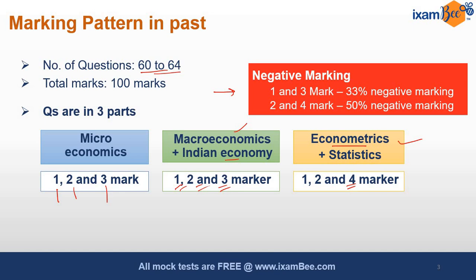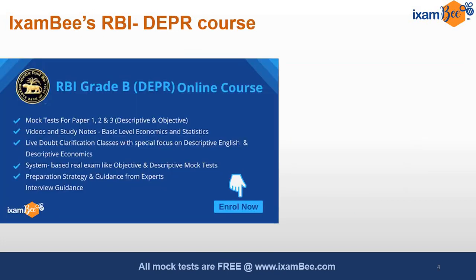You have to be very cautious. I always talk about the option elimination method. In most exams we find 25% negative marking, but here, when there is 50% negative marking in 2-mark and 4-mark questions, you have to be very careful not to do guessing work. Only at iExamBee we are doing this course for RBI DEPR preparation.